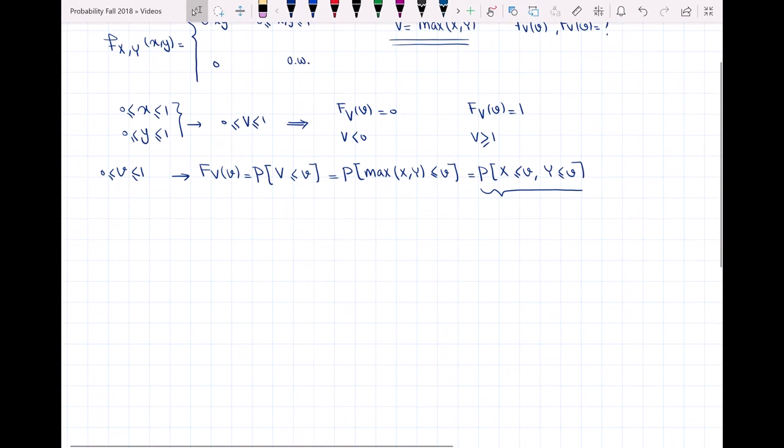So I'm going to have the double integral. This double integral gives me the CDF of V for when V is between 0 and 1. It's the integral from 0 to v, from 0 to v of 6xy squared dx dy.